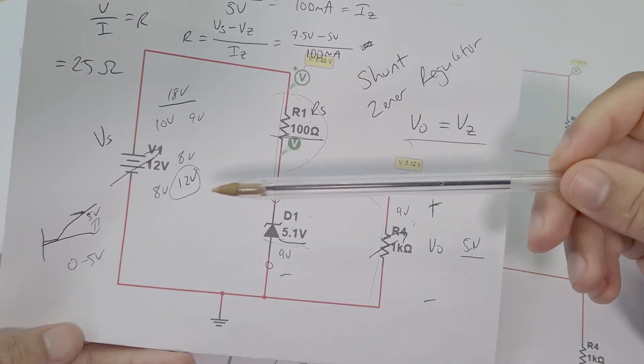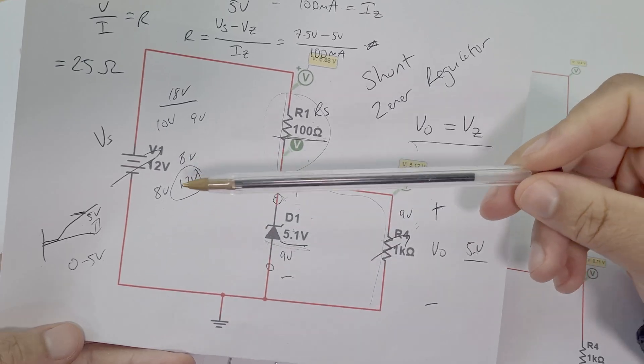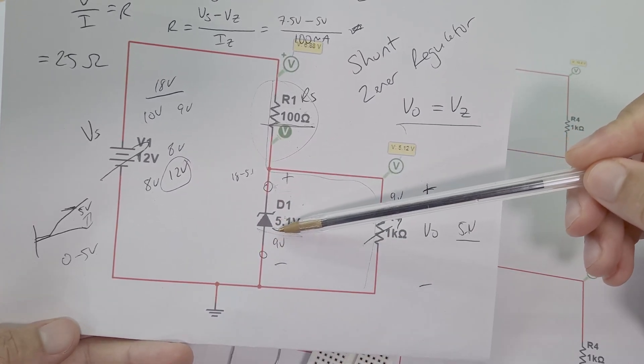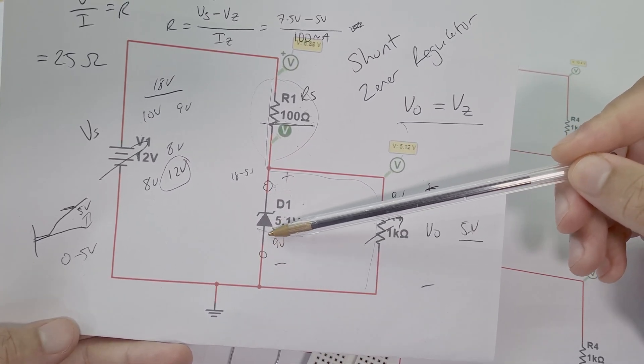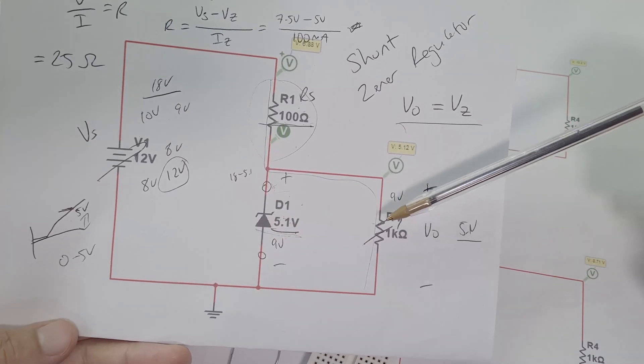It takes a higher voltage input than the Zener diode, drops that across the Zener diode. So then you get the 5 volts or whatever voltage you want out, and then it creates a stable voltage output.